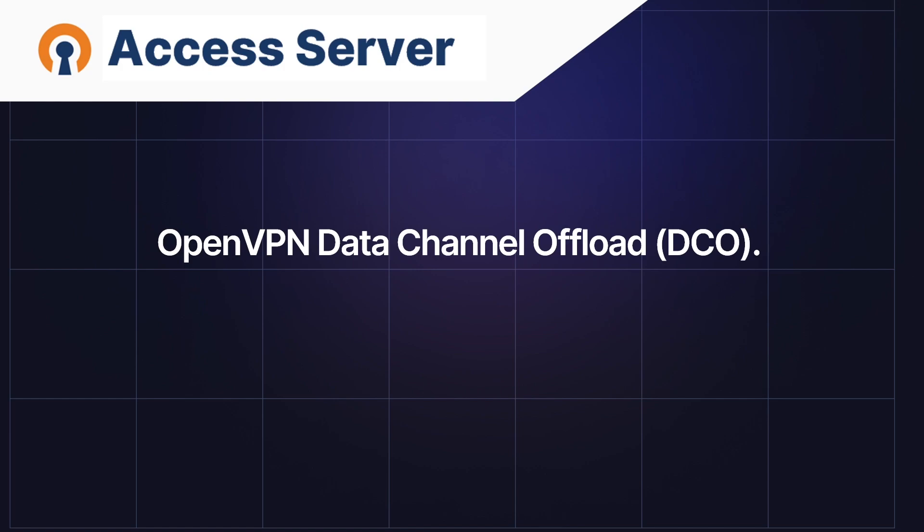In this video we're looking at the OpenVPN data channel offload, or DCO. This is an introduction to this feature. Security is one of the most important things to consider when you're online — the more your online communications are secured with encryption, the better. Data encryption has slowed down computing speeds in the past, which has improved with modern CPUs, but we can do more.